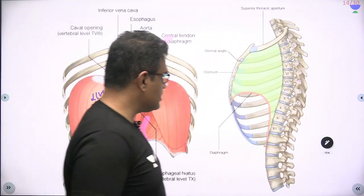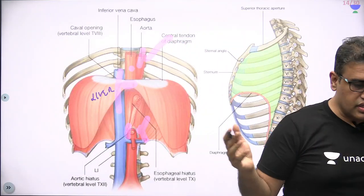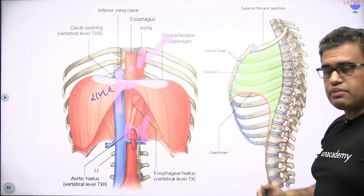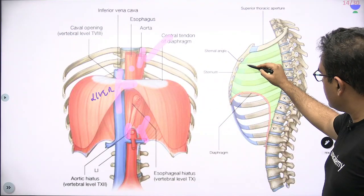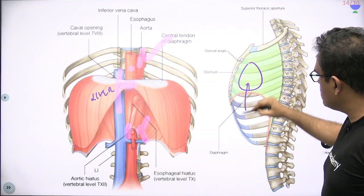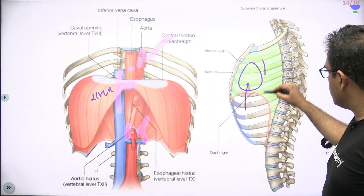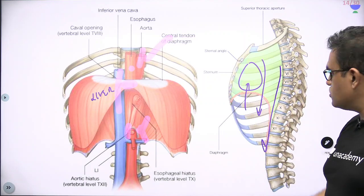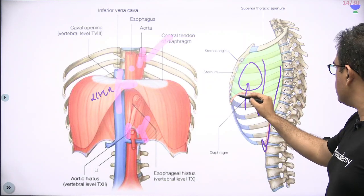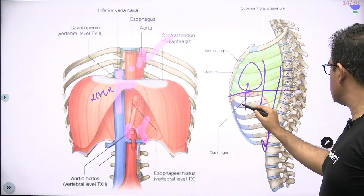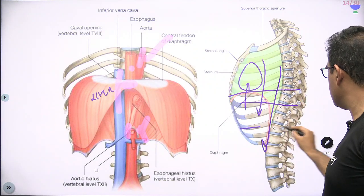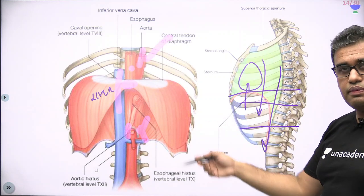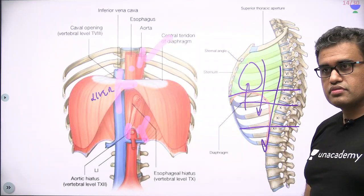Coming back to this image — the same discussion in anterior and lateral views. The IVC opens at T8, the esophagus is coming down at around T10, and the aorta is coming down at around T12. Basic idea — three major openings, and other structures will pass through them as we will subsequently see.